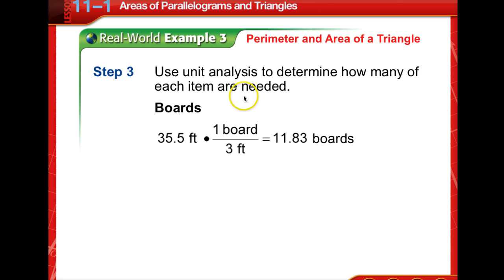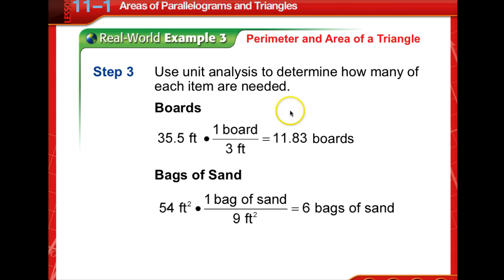Now we're going to use unit analysis to determine how many of each item are needed. We need 35.5 feet, and every board is 3 feet long. So we multiply 35.5 times 1, then divide that by 3 to get 11.83. So we know we're going to need 12 boards to get this much. The sand, we need 54 squared feet. One bag gives us 9 square feet, so 54 times 1 divided by 9 will give us an even 6 bags of sand.